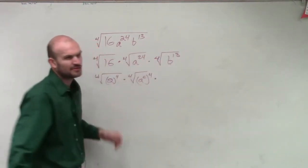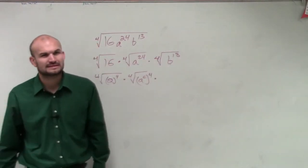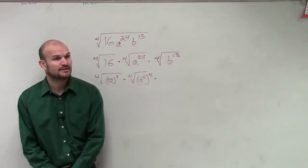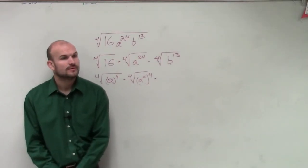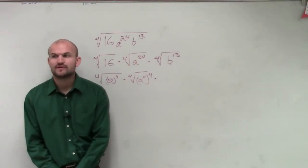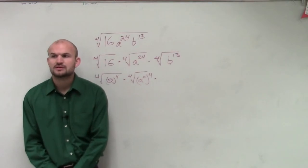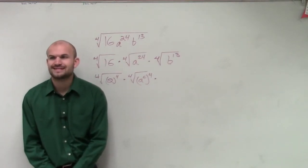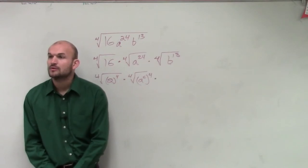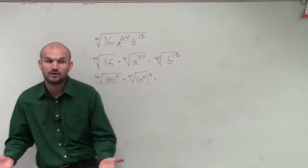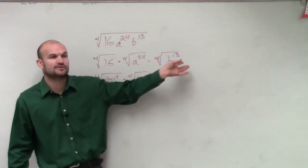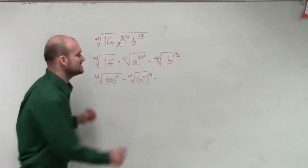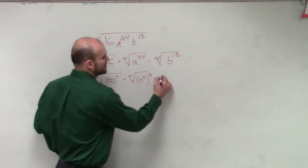What about b to the 13th? We can't do that evenly — we're not going to work with fractions. So what do we do if we have a number that's not divisible by our root? Well, 4 doesn't go into 13, but 4 goes into 12. So let's see if we can break this up again.